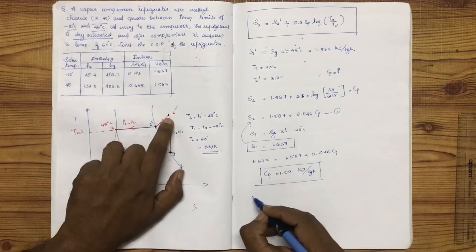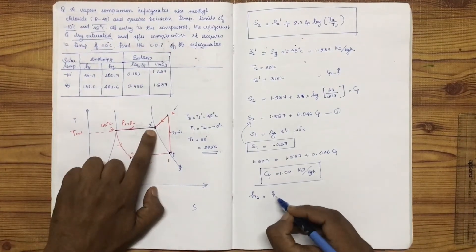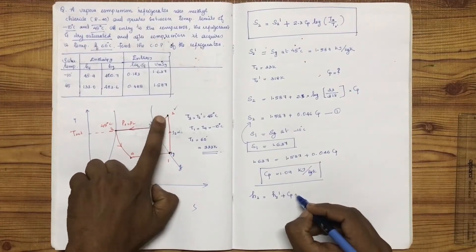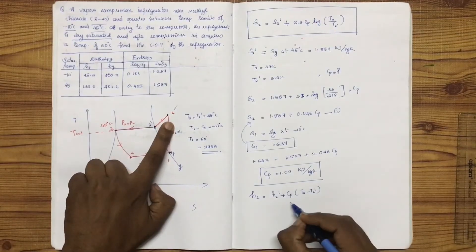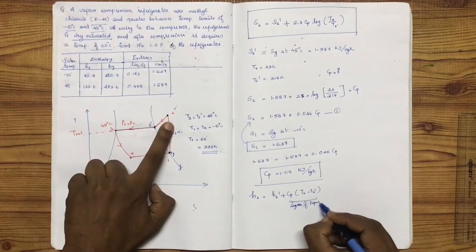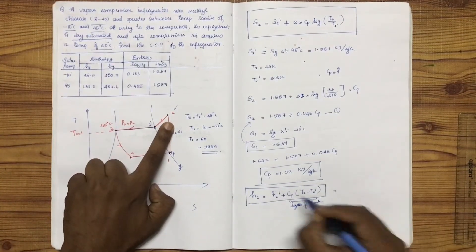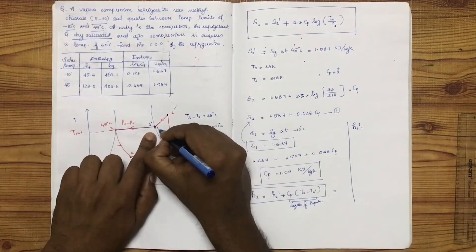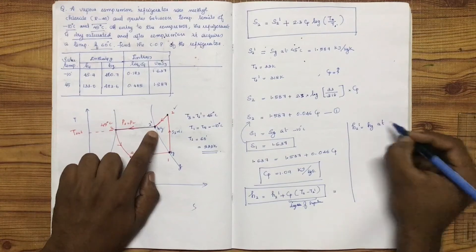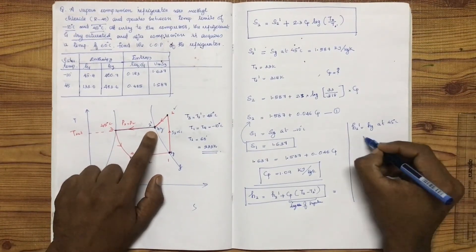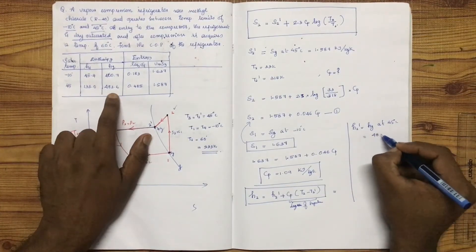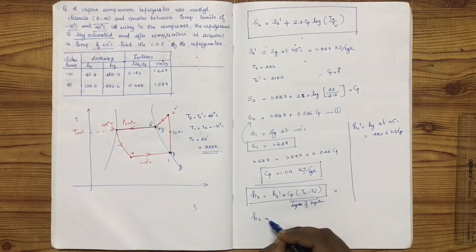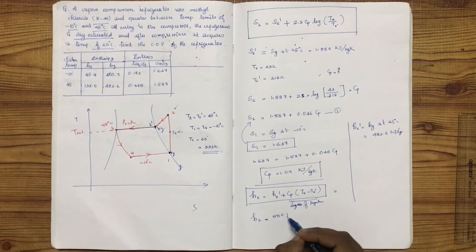This is the specific heat of the refrigerant vapor. Now, H2 equals H2 prime plus Cp times the degree of superheat, which is Cp times (T2 minus T2 prime). H2 prime equals Hg at 45 degrees Celsius, and Hg at 45 degrees is 483.6 kJ/kg.